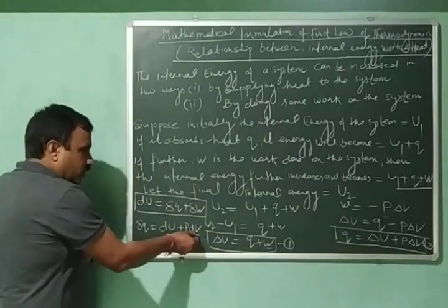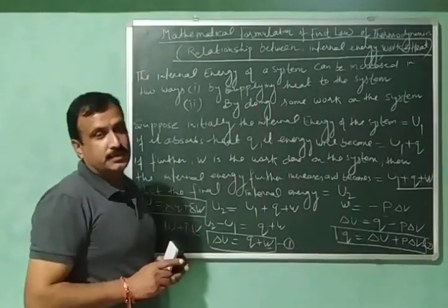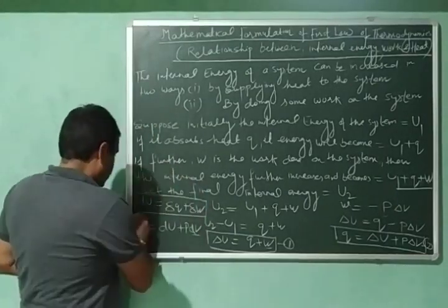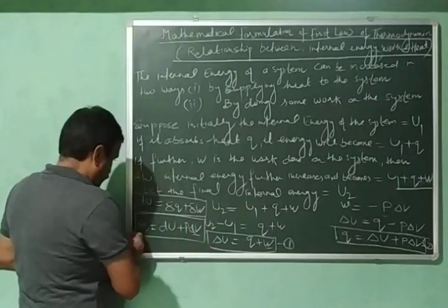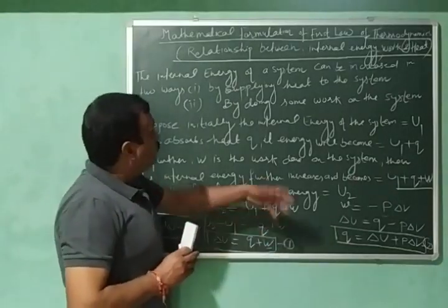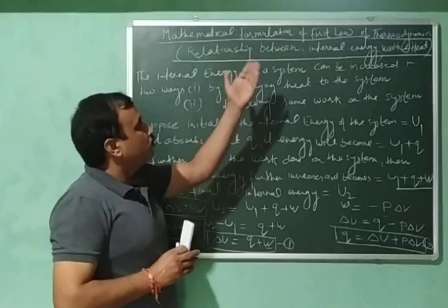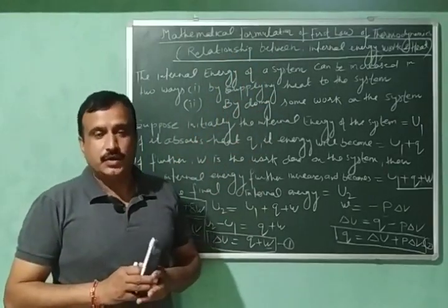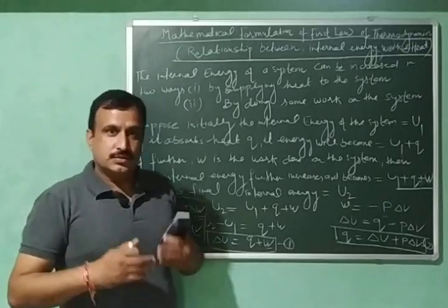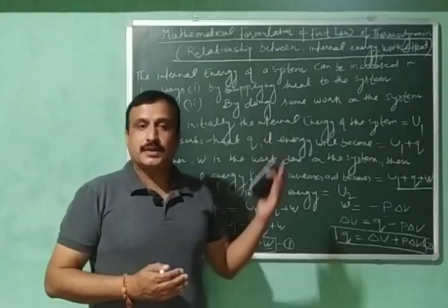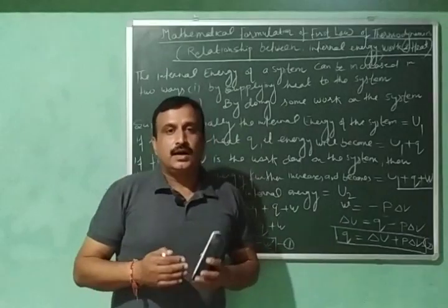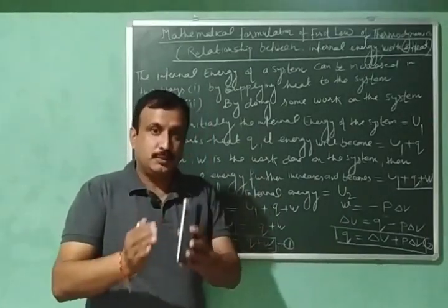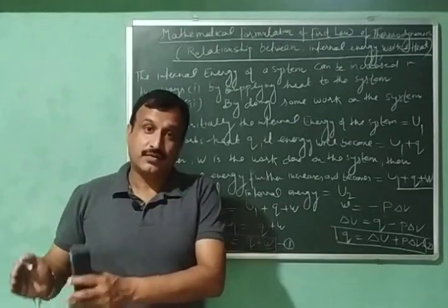The second equation is similarly represented as delta Q equals dU plus P dV. Here, volume is a state function, so its differential is exact. These are the different forms of the mathematical formulation of the first law of thermodynamics. In the coming video, I am going to discuss the different forms of this mathematical formulation under different conditions.